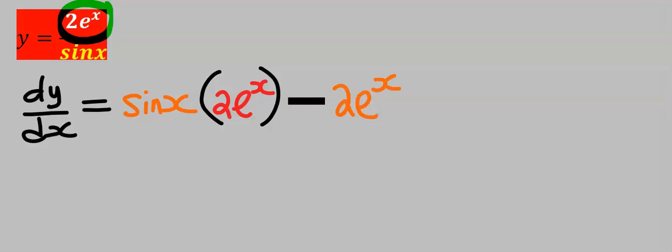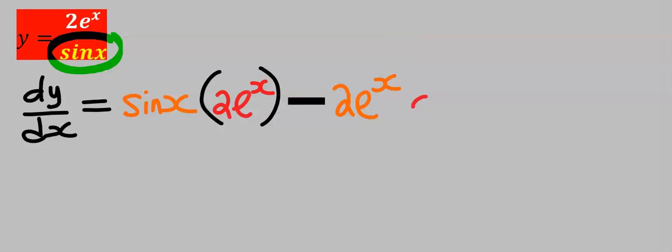Next, we're going to differentiate the denominator. From the basic derivative table, when you differentiate sin(x), you're going to get cos(x). Hence, I'm going to have cos(x) for the derivative of sin(x).